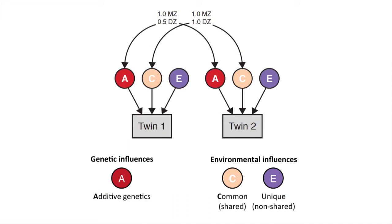If you've measured some characteristics of both twins, you can put it together into a structural equation model. Here we use what we know about the relationship between identical twins (monozygotic twins) and fraternal twins (dizygotic twins) to decompose the variance into additive genetic effects, shared environmental effects, and non-shared environmental effects — that's A, C, and E.